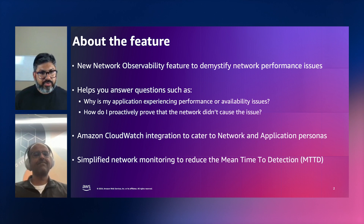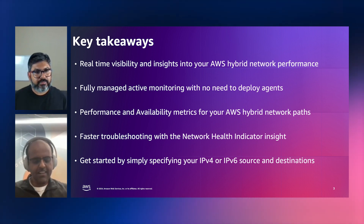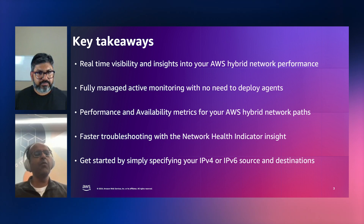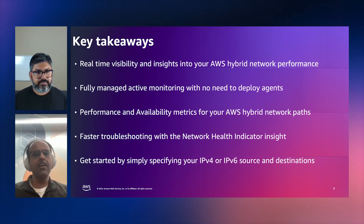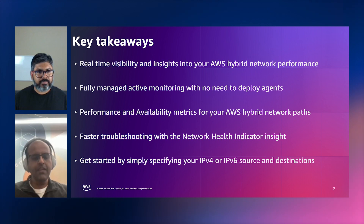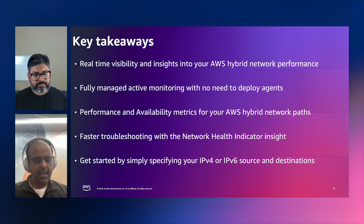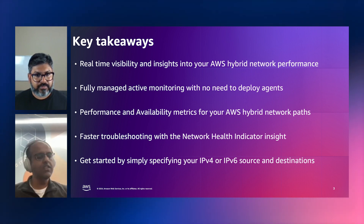Can you talk about some of the key features of this product? Absolutely, Ankush. Happy to go into it. The CloudWatch Network Monitor we just launched has some key tenets. Number one, we wanted to give you real-time visibility into your hybrid network performance. When we say AWS Hybrid Networks, this comprises site-to-site VPN and Direct Connect. With real-time, what we mean is we want this data provided through active probes and active measurements, not just a historical view. This is important for large customers with critical workloads who need to make split-second decisions on network actions.